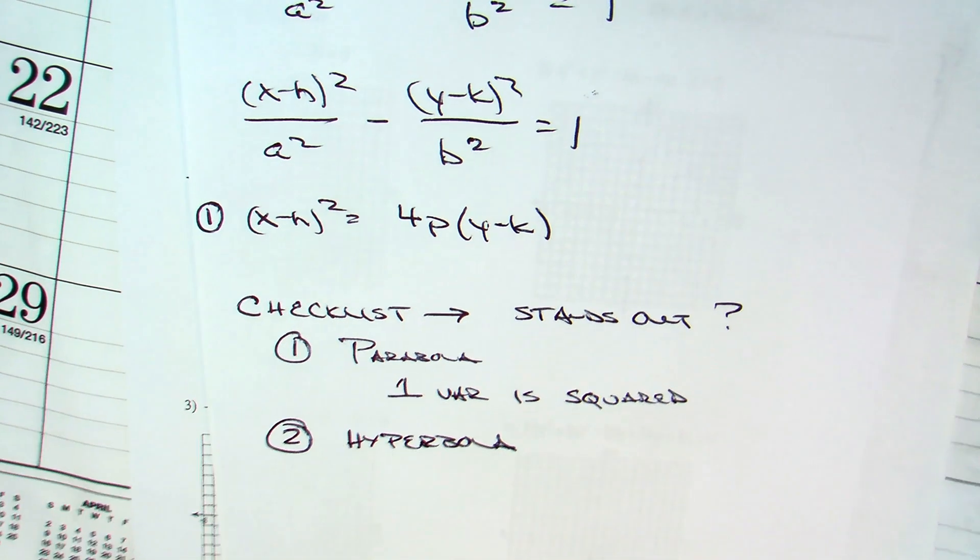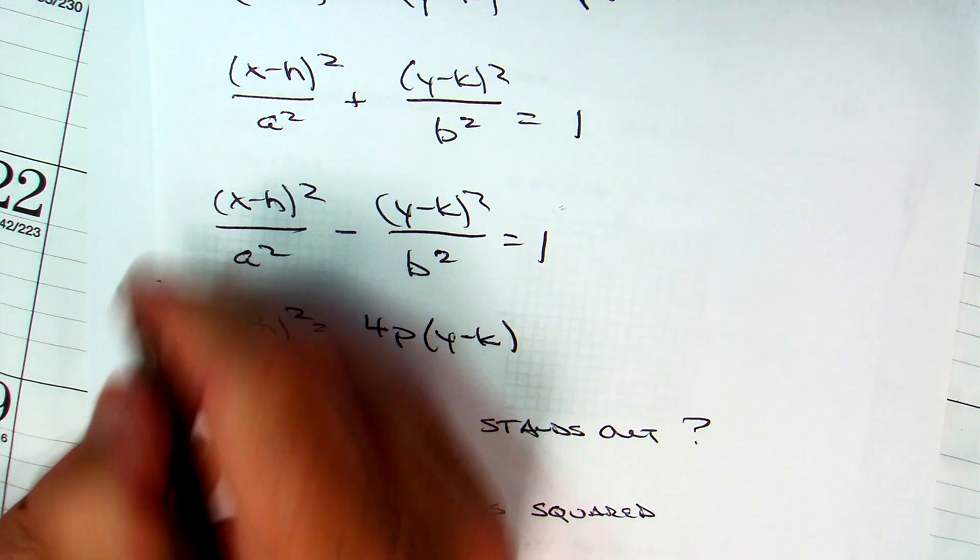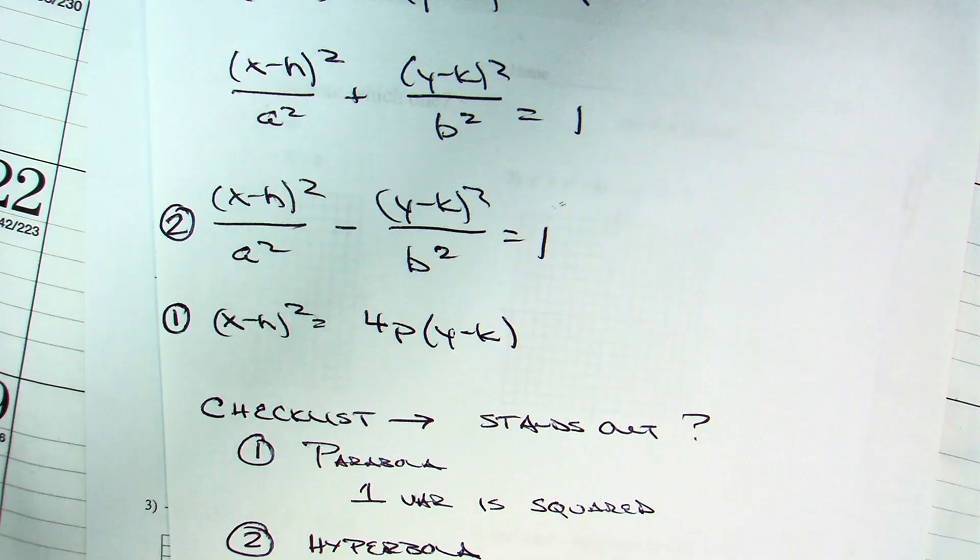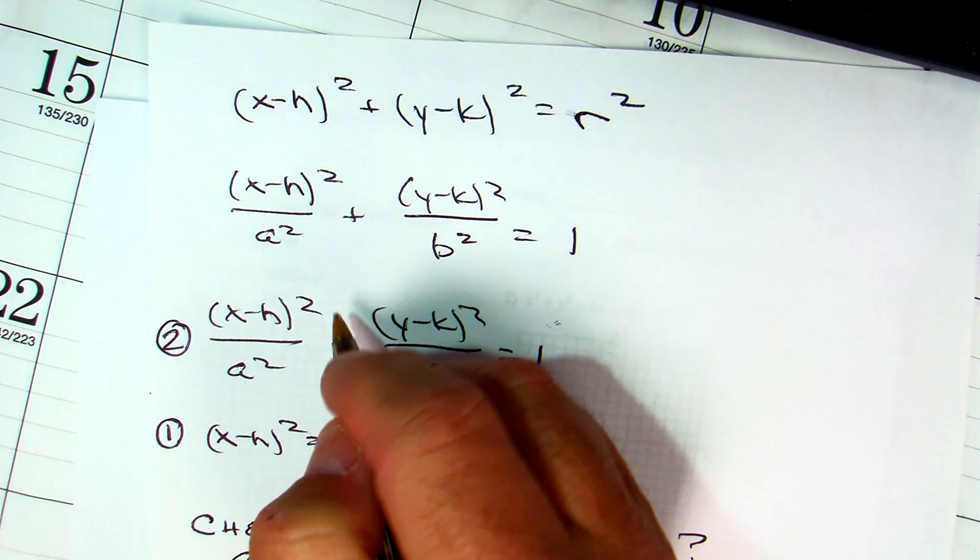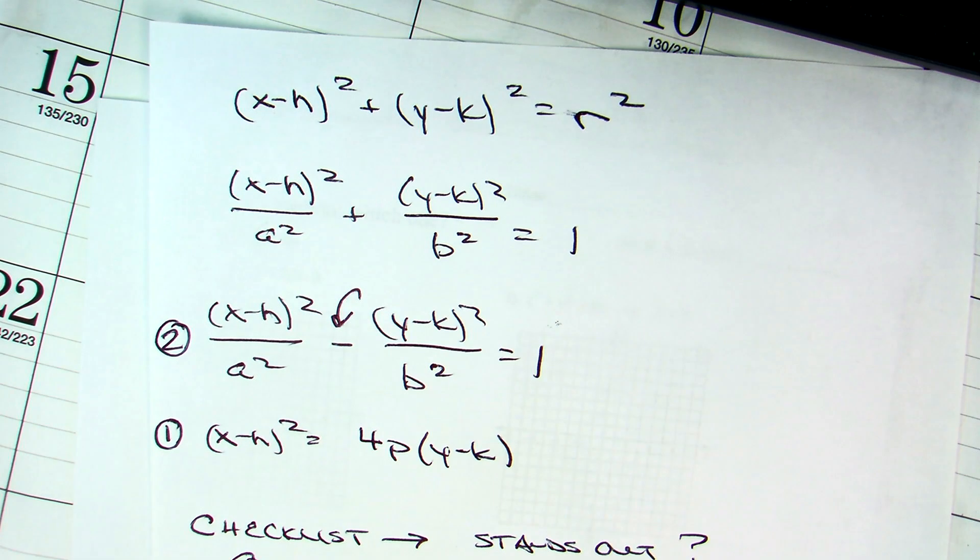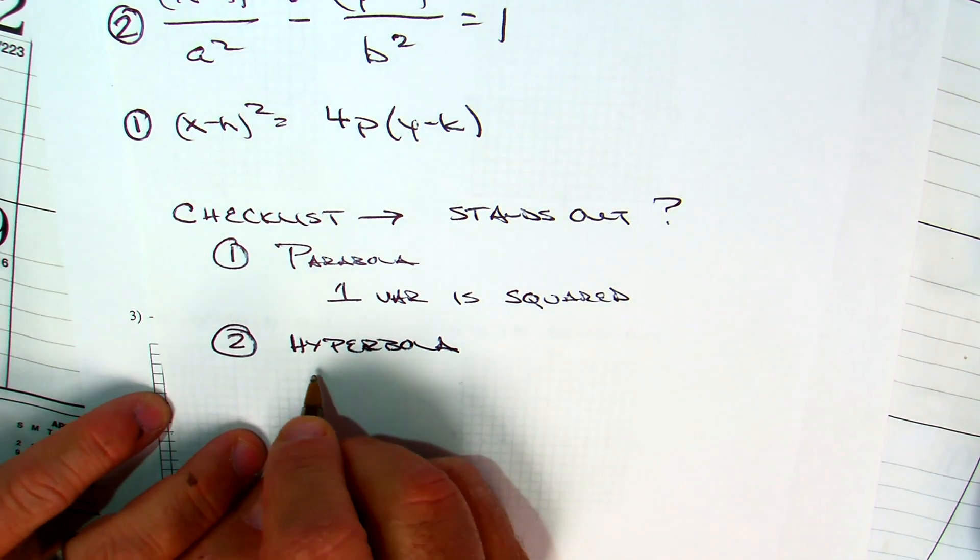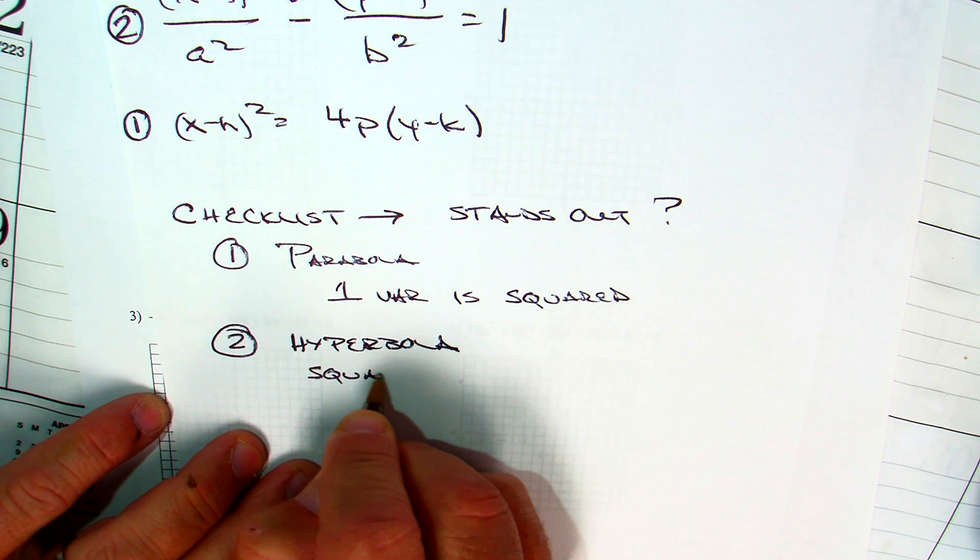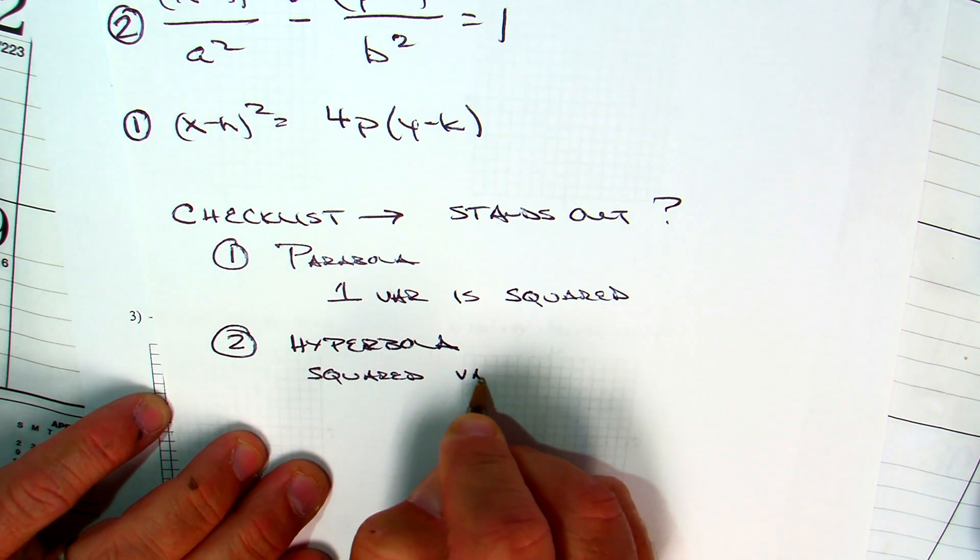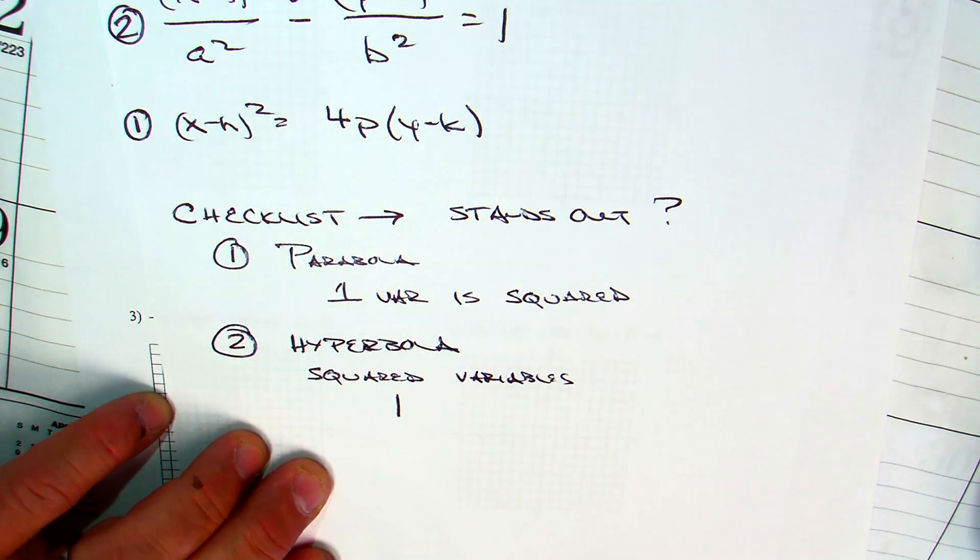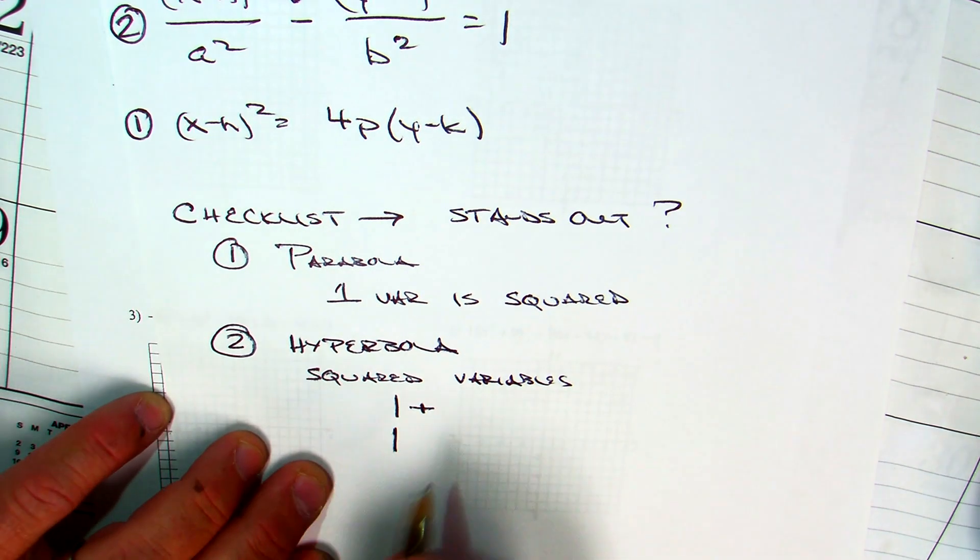Why does the hyperbola stand out after that more than the circle and ellipse? What does the hyperbola have, which is this one, that the others don't have? It's subtraction. What that means when you have a hyperbola is when you look at the squared variables, one will be positive, and one will be negative.